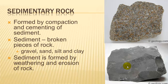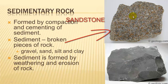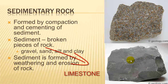Sedimentary rock is formed by compaction and cementing of sediment. Sediment is tiny, broken-up little pieces of rock — gravel, sand, silt, and clay are all examples of sediment. Sediment is formed by weathering and erosion of existing rock. Here are two good examples of sedimentary rock: sandstone and limestone.